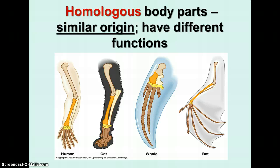Homologous body parts have similar origin but different functions. Here you see the forelimbs of four different mammals, and they all have the same kinds of bones — a humerus, radius and ulna, carpals in the wrist, metacarpals in the hand, and phalanges.